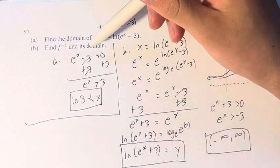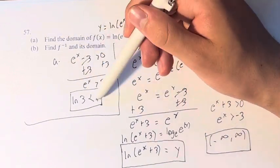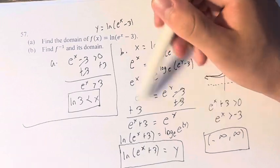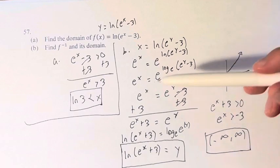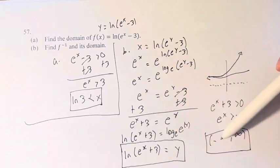Therefore, the domain of f(x) equals ln(e^x - 3), so that x must be greater than ln(3). The inverse of this function is ln(e^x + 3). And the domain of that is all real numbers. Thank you.